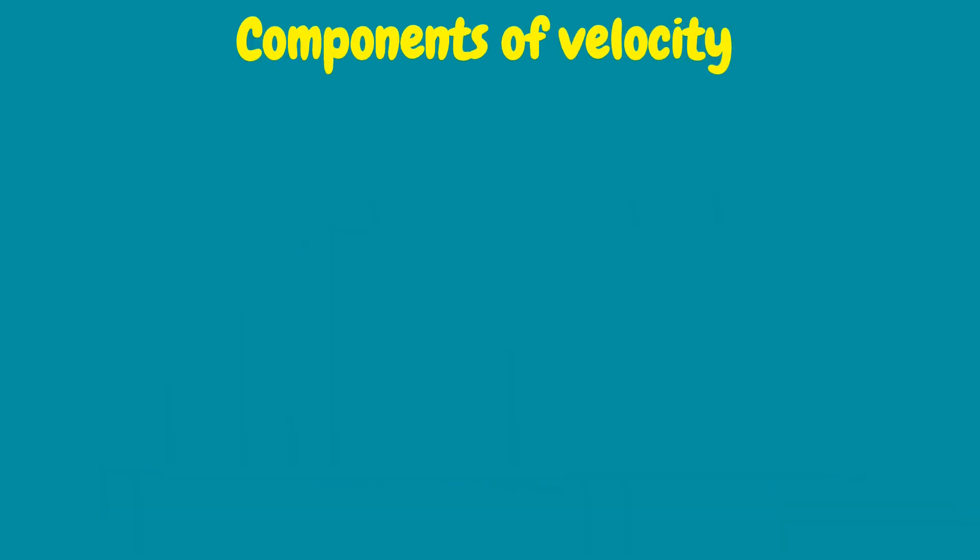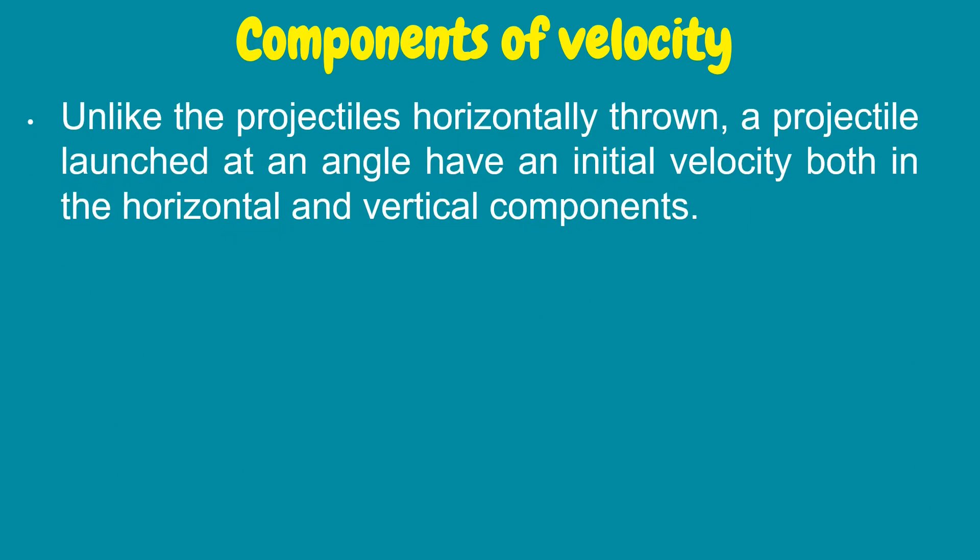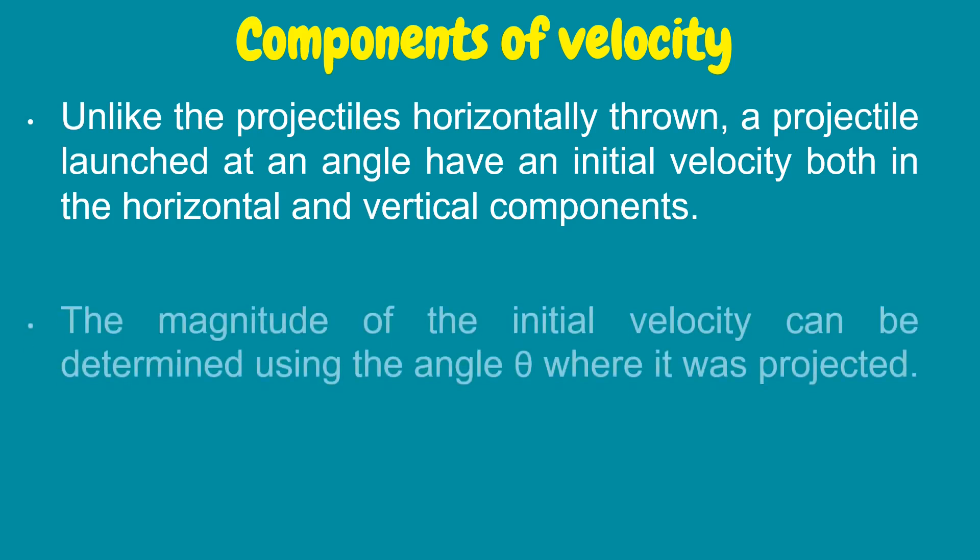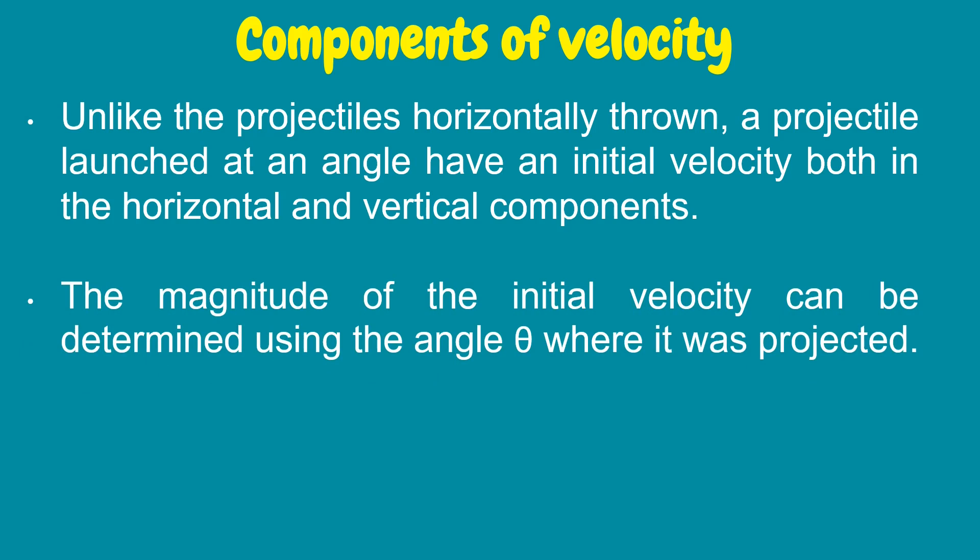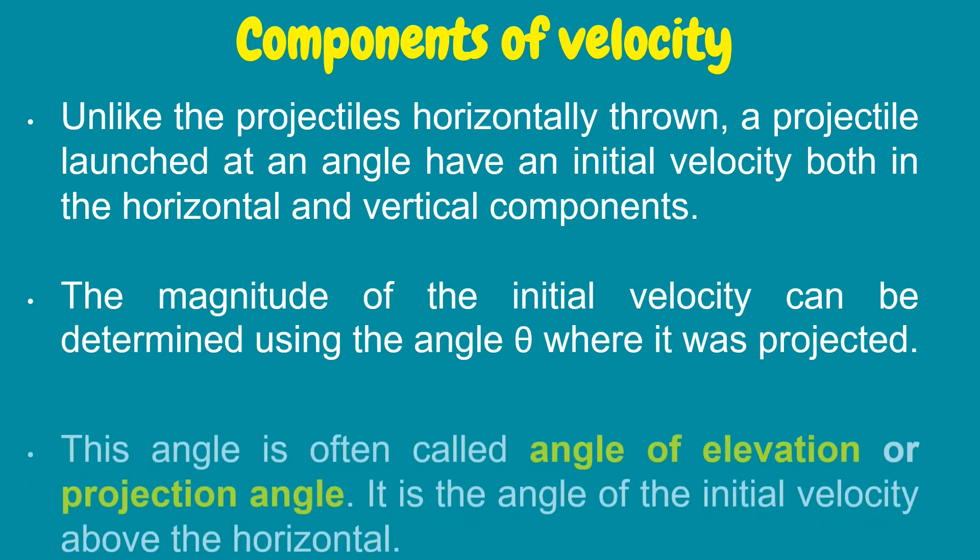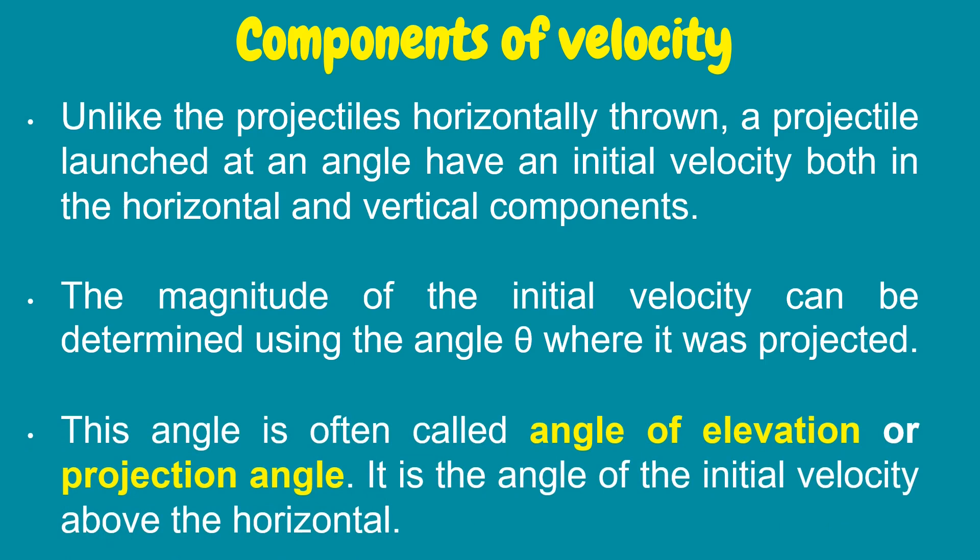Unlike projectiles thrown horizontally, a projectile launched at an angle has an initial velocity both in the horizontal and vertical components. The magnitude of the initial velocity can be determined using the angle theta where it was projected. This angle is often called angle of elevation or projectile angle. It is the angle of the initial velocity above the horizontal.